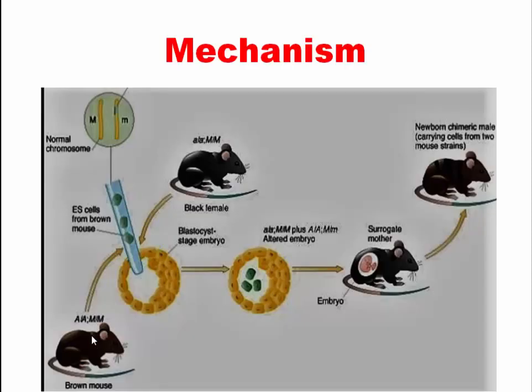To make a Chimeric Mouse, first two types of mouse are selected. Here you see that one type of mouse is a brown mouse and another is a black mouse.